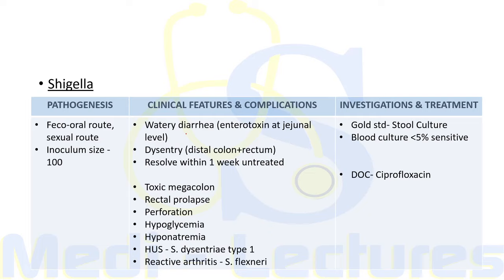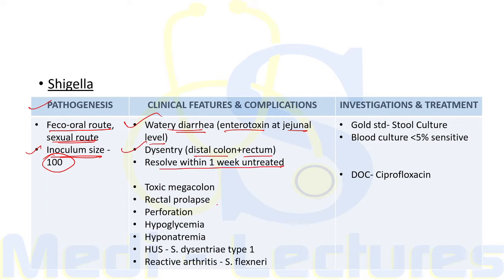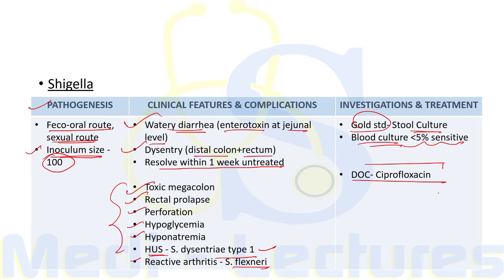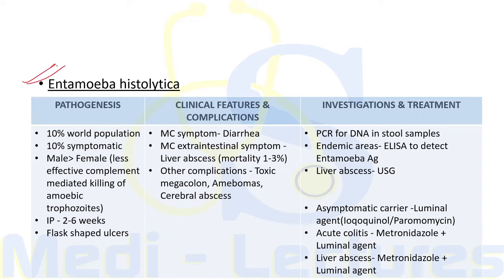Yersinia enterocolitica causes multiple autoimmune reactions like thyroiditis, pericarditis, glomerulonephritis, and can also lead to pseudo-appendicitis. Shigella can be transmitted through feco-oral and sexual routes; inoculum size is very small — only 100 bacilli can cause infection. It is characterized by watery diarrhea at the jejunal level due to enterotoxin, but can also cause bloody diarrhea if it involves the distal colon and rectum. It resolves within one week even if untreated. Complications include toxic megacolon, rectal prolapse, perforation, hypoglycemia, hyponatremia. Shigella dysenteriae type 1 leads to HUS due to shiga toxin; Shigella flexneri leads to reactive arthritis. Gold standard investigation is stool culture. Drug of choice is fluoroquinolone (ciprofloxacin).